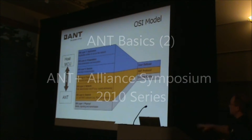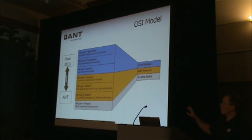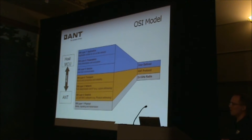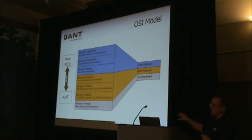Over here, this is what I referred to earlier: the OSI model. Again, this isn't really all that important for your understanding of ANT. It is kind of nice to see how things map onto more theoretical concepts. You can see that the ANT portion — the chip — integrates all the four lower layers of the OSI model.